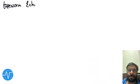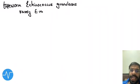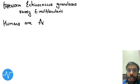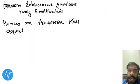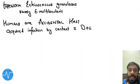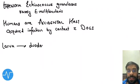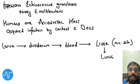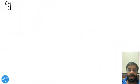Hydatid cysts in the lung are caused by the tapeworm Echinococcus granulosus, but rarely can also be caused by Echinococcus multilocularis. Humans are the accidental host, acquiring infection by contact with infected dogs. The first larva goes into the duodenum, then to the blood, reaching the liver — the most common site — and then to the lung.